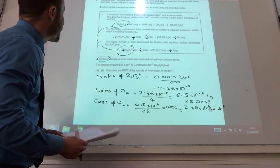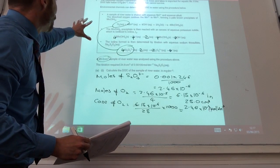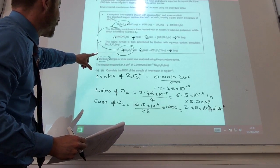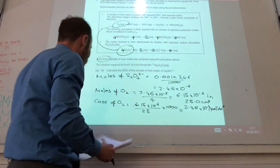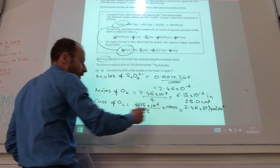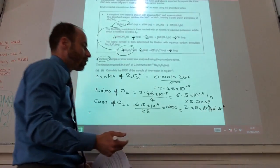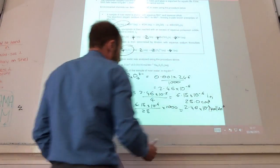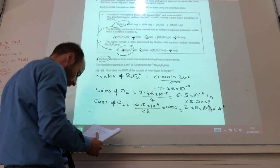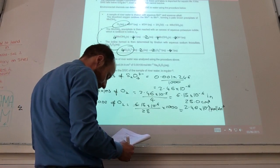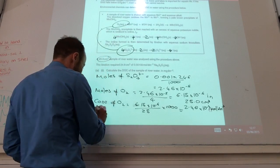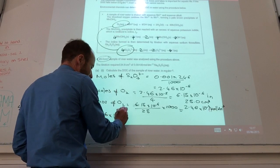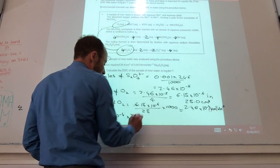If you notice, they actually want us to work it out in milligrams per decimeter cubed. So to convert moles per decimeter cubed into grams per decimeter cubed, I need to times by the molar mass of oxygen. So if I do that, it's going to be 2.46 times 10 to the minus 4 times 32.